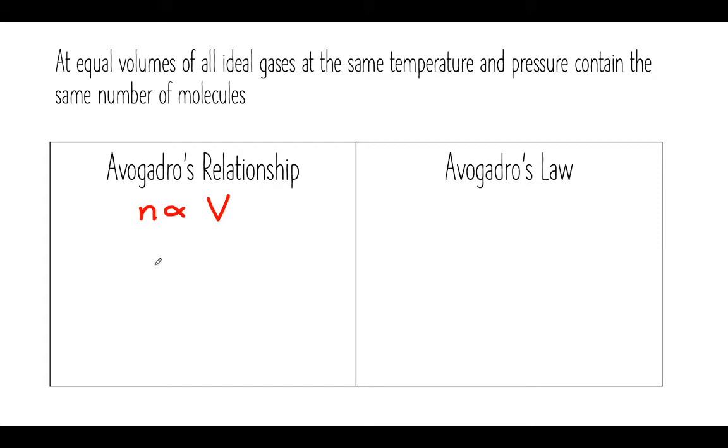When you're increasing the number of moles, you increase the volume. And this can be summarized by the formula N1 over V1 is equal to N2 over V2. And just like the other laws, if you know any three of these variables, you can solve for the fourth variable.